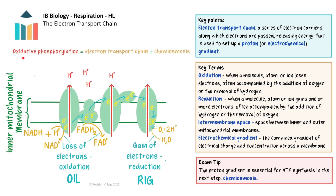Oxidative phosphorylation comprises the electron transport chain and chemiosmosis, so we will go through both to see how they work together to produce ATP. The electron transport chain occurs in the inner mitochondrial membrane, where the electron carriers are embedded. The reduced NAD and FAD from the Krebs cycle donate high energy electrons to these electron carriers, which are then oxidised — as oxidation is loss of electrons, remember OIL RIG: Oxidation Is Loss, Reduction Is Gain. The oxidised NAD and FAD now return to the Krebs cycle to collect more electrons.